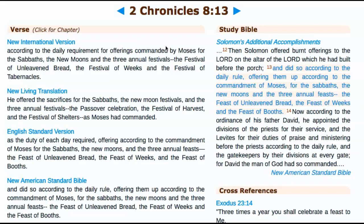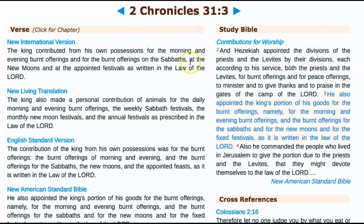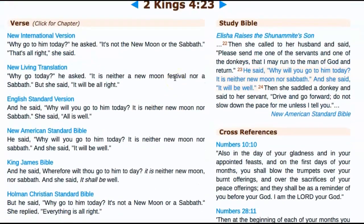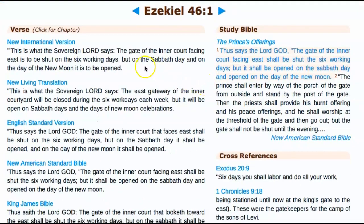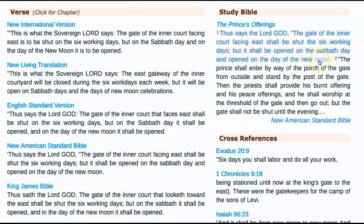Even in 2 Chronicles 31:3 and 2 Kings 4:23 it's the same thing — these translations say 'new moon' alongside Sabbaths and appointed festivals, but the word is kadash, Strong's H2320, meaning 'new month.' The same applies to Ezekiel 46:1, where it has to do with the Sabbath, yet translations all say 'new moon' — but the Yahudiath Hebrew is Strong's H2320, which means month. Therefore it should say 'new month,' not 'new moon.'